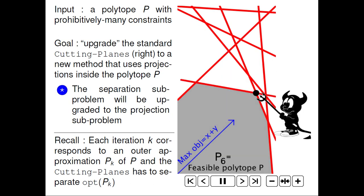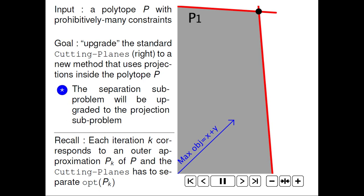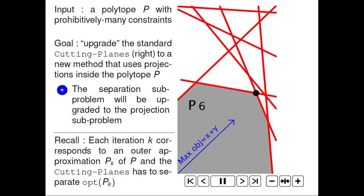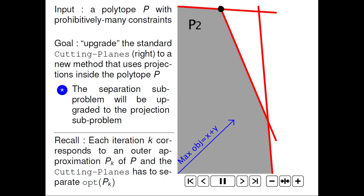We have a need for cutting-planes because we cannot list all constraints. The cutting-planes usually evolves, like in this figure, using a separation subproblem at each iteration. We propose to replace the separation subproblem with the projection one.